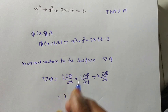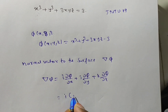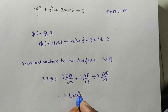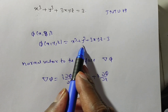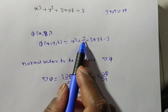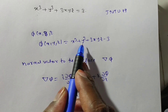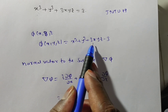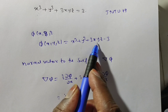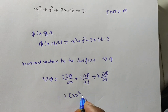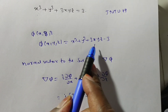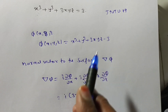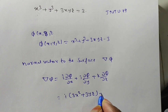For the i component, differentiate with respect to x: the derivative of x³ is 3x². The y³ term does not contain x, so its derivative is 0. Here 3yz is a constant, so the derivative of x with respect to x is 1, giving 3yz. The constant −3 gives 0. So ∂φ/∂x = 3x² + 3yz.